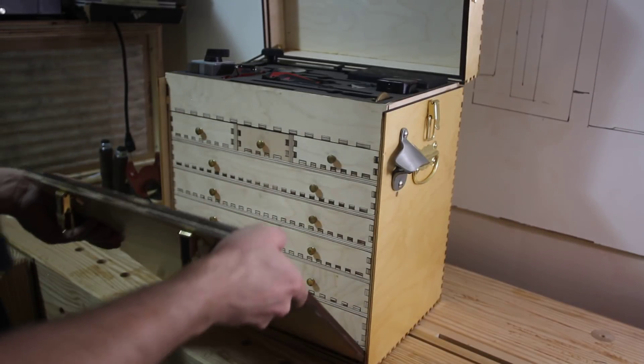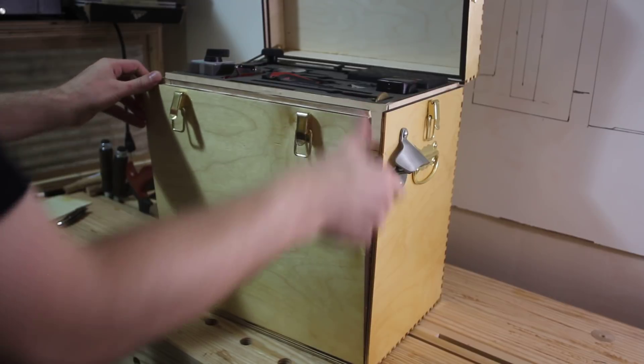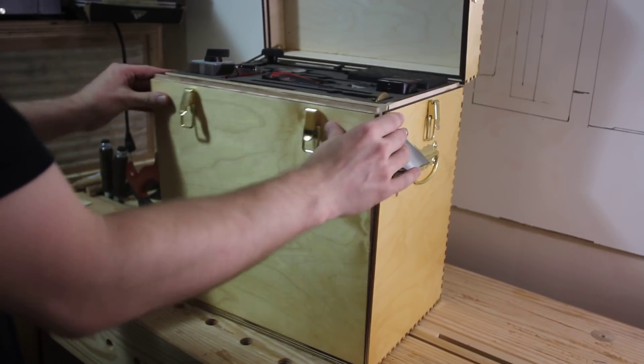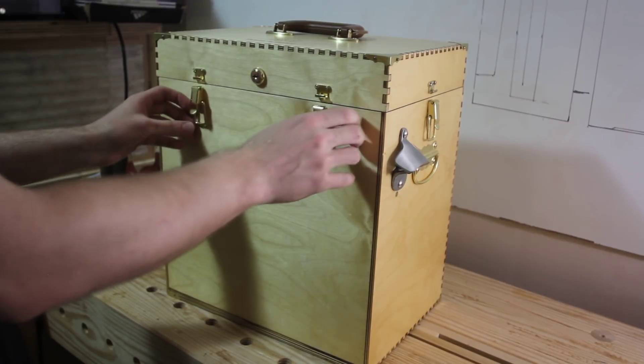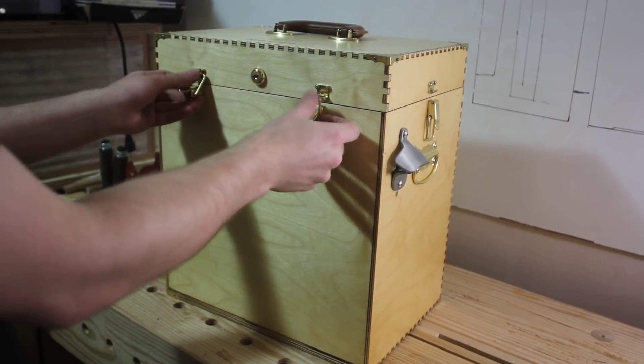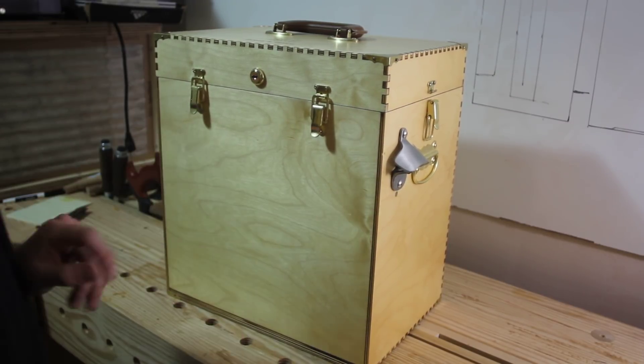So during travel, this bottom lip locks into the bottom. When we close the lid again, the upper lid locks the front panel into the front. So now, during travel, everything is nice and solid. We can turn it on the back.